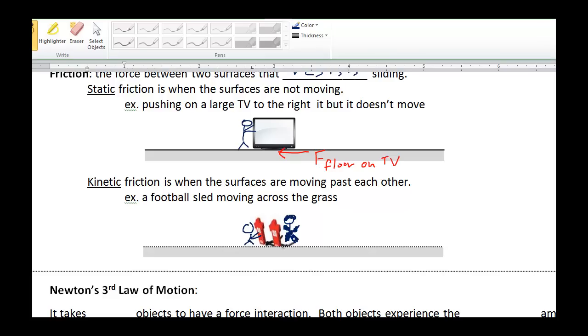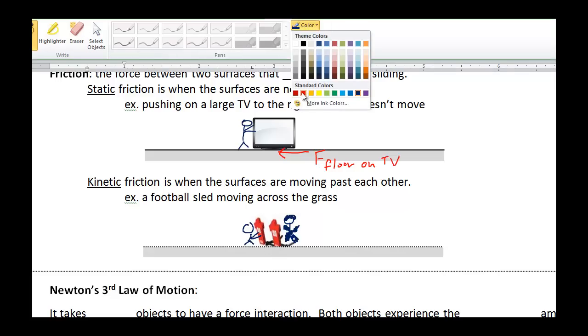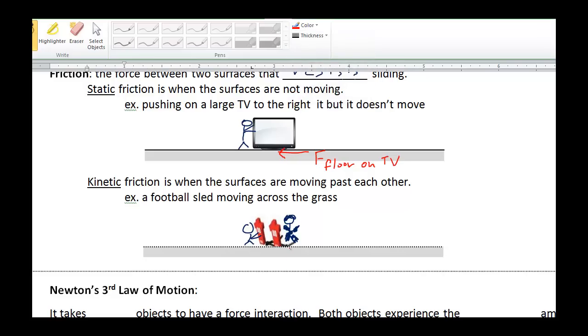Okay, now, they're being slid across by one of the other players. There is friction, though. It's not so easy to get these players to slide, because of kinetic friction force. So, we can draw that here. This would be the force of the grass on the sled, preventing the sled from sliding over the grass easily.